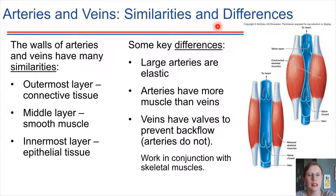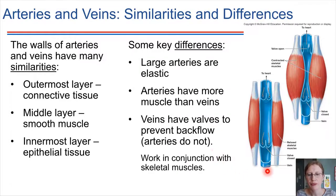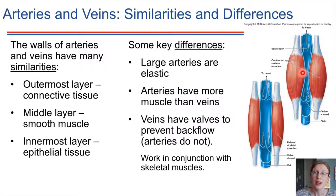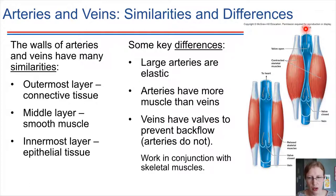In many cases, the pathway that veins take through the body runs right next to skeletal muscles, which is very important. When skeletal muscles contract, they shorten and get wider, helping to squeeze blood along through the vein. If there were no valves, blood would squeeze in both directions. The valves ensure that when muscles squeeze the vein, blood flows in one direction only — toward the heart.